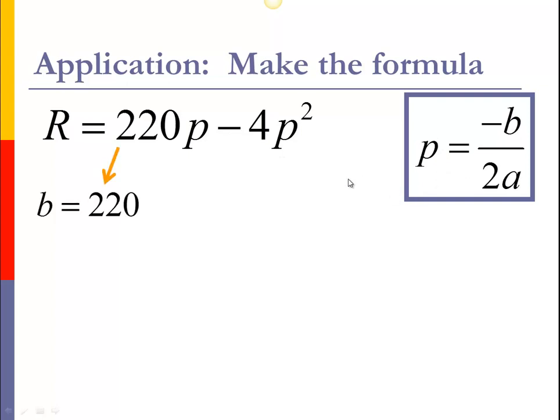Now the pieces that we need—we need the B and the A. And so the B number, that's the number that's the coefficient with the power 1, that's with the P. And the A number, the coefficient,